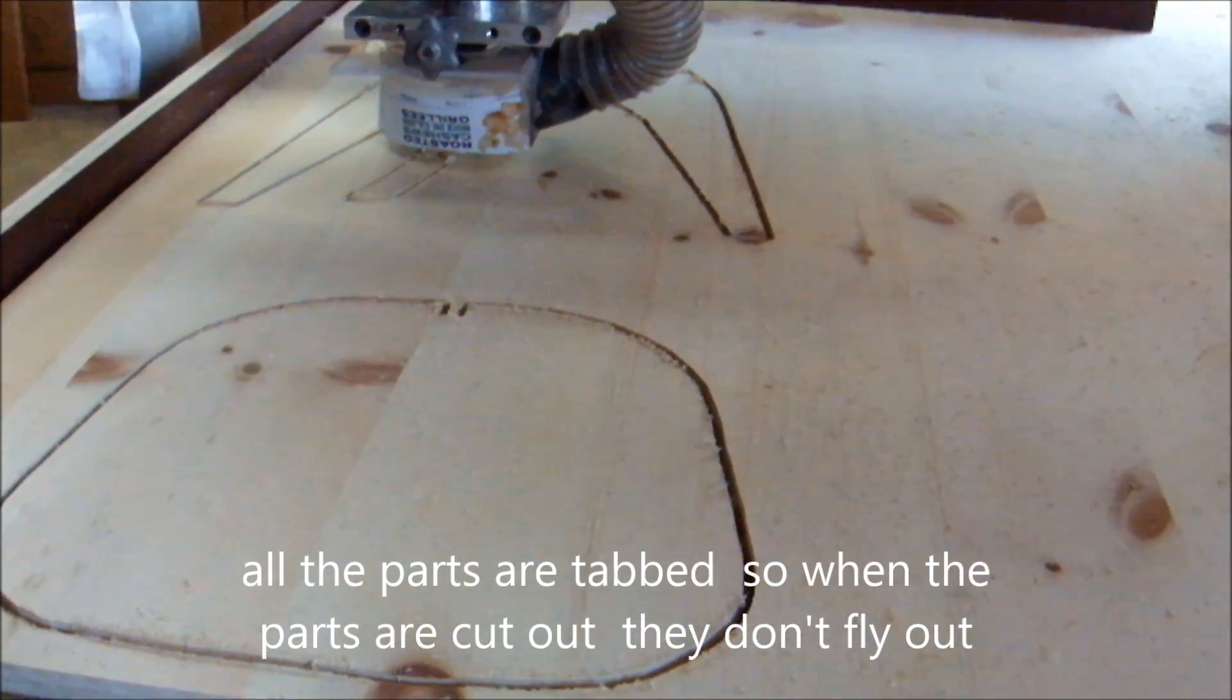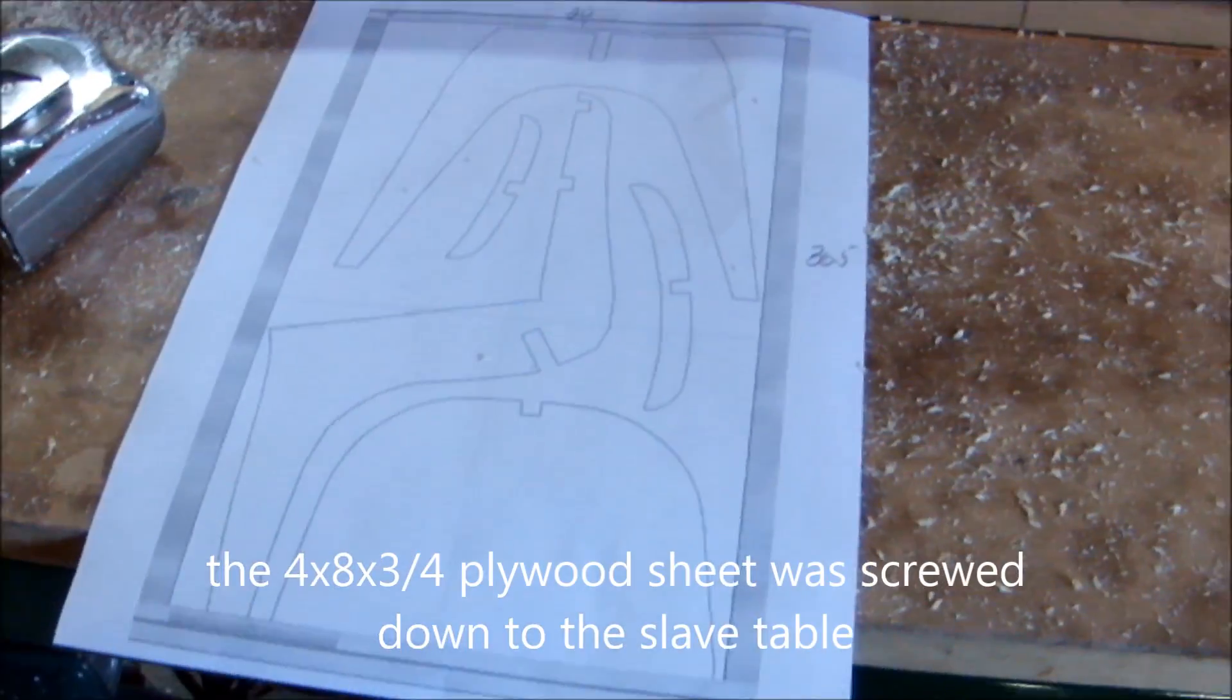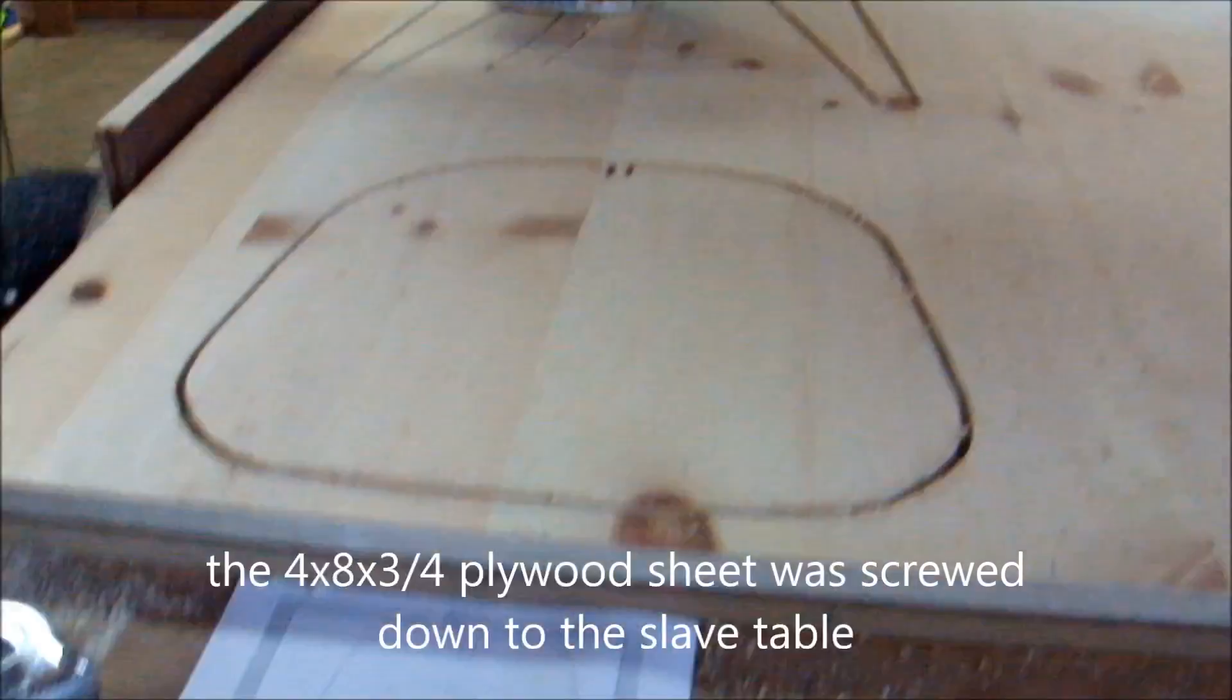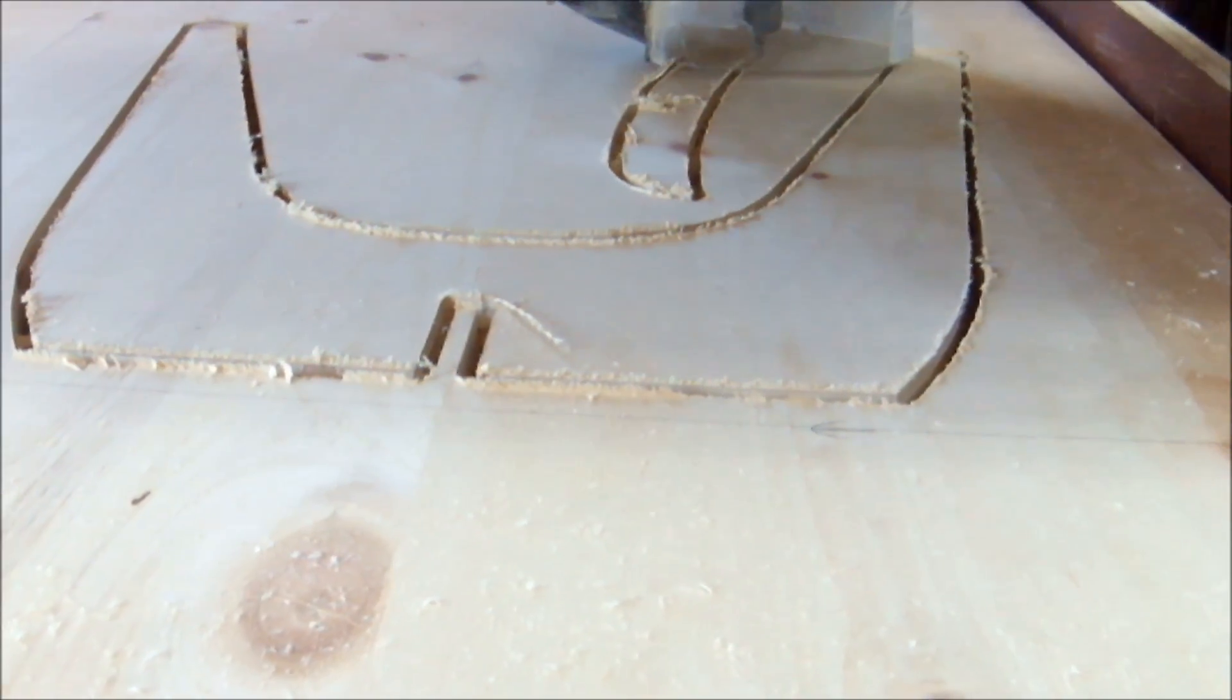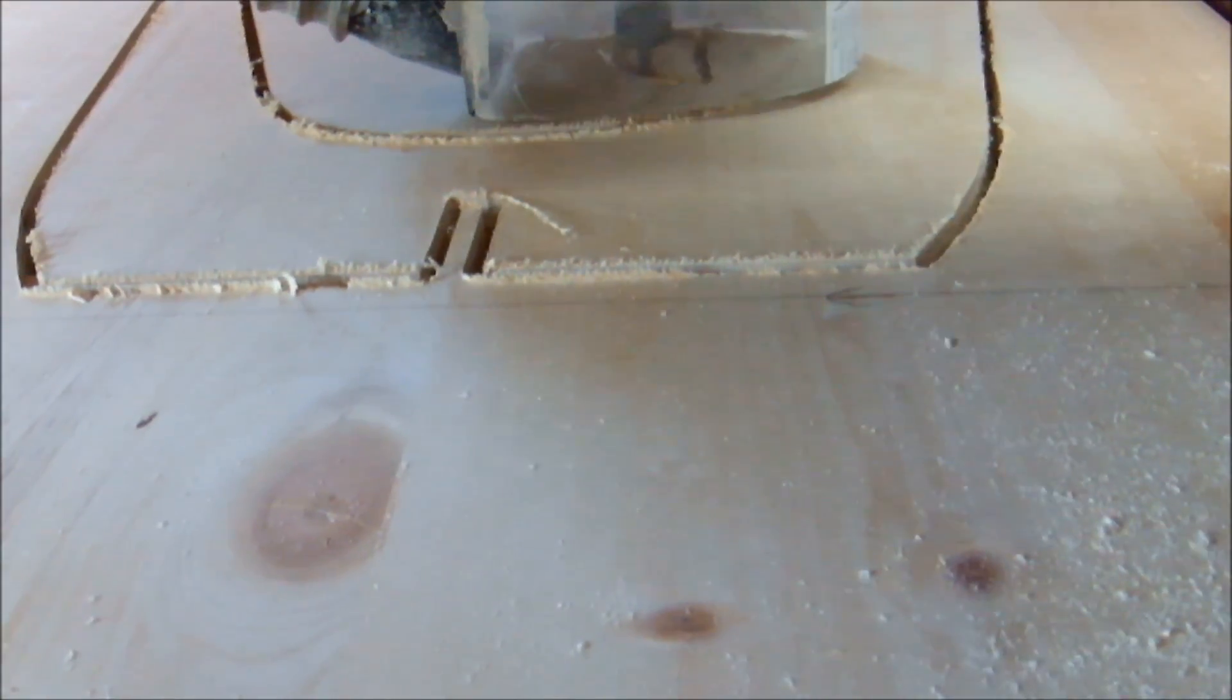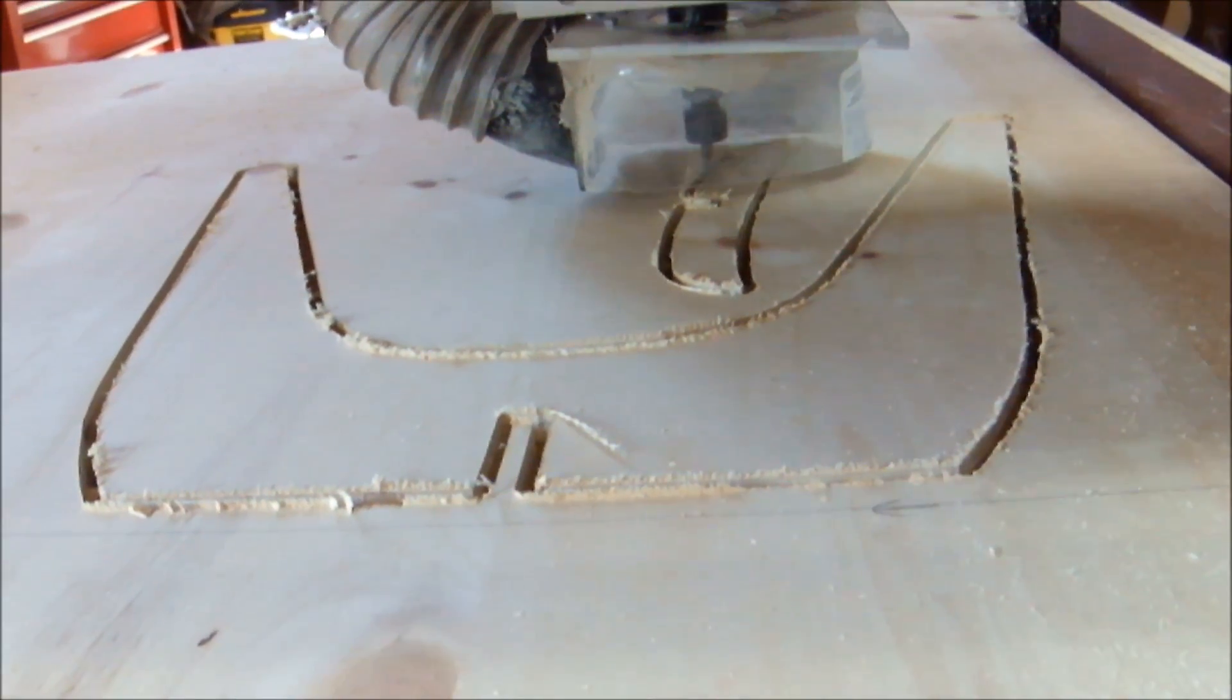I've got an eighth inch skin board underneath that three-quarter inch plywood, so my cuts are .79 deep, the plywood's .75. So it cuts right through, but doesn't damage my slave board. Also I have the quarter by quarter tabs to keep the parts in place. I don't want any parts flying out and causing any damage.